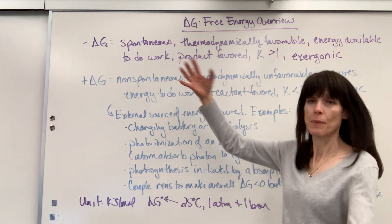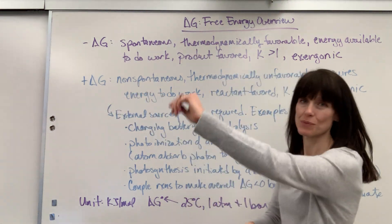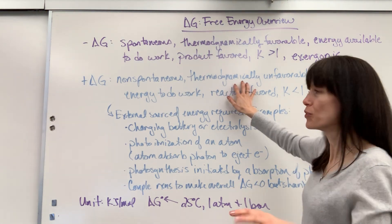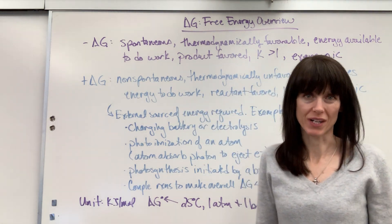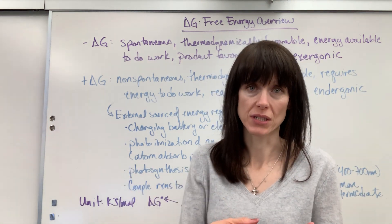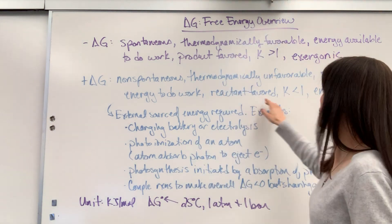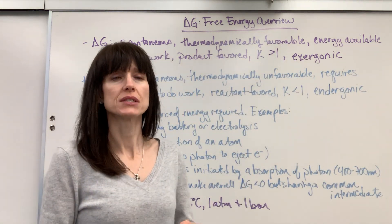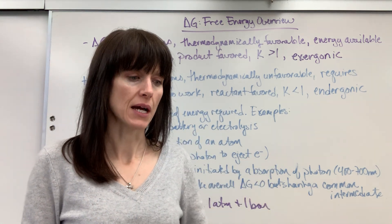Positive delta G is the opposite: non-spontaneous. When the value is positive, it's non-spontaneous — thermodynamically unfavorable, just another way to say non-spontaneous that I'm seeing in some textbooks. It requires energy to do work, so if I want something to do work, I have to put energy into it. It's going to cost me something. It's reactant favored, which means K is less than 1. The term for this is endergonic — just like positive delta H is endothermic and non-spontaneous, positive delta G is called endergonic.